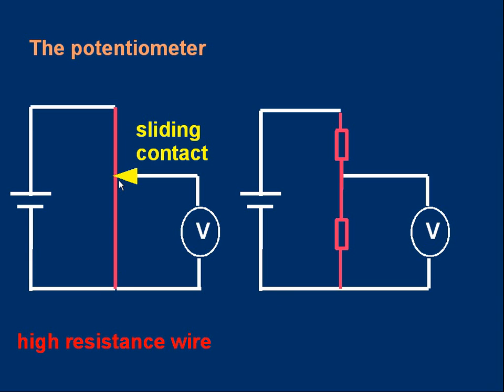Each of those parts is equivalent to a separate resistor. So if you look at the circuit on the right, I hope you can see that the two separate resistors correspond to the upper and lower parts of the wire, above and below the sliding contact.